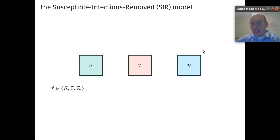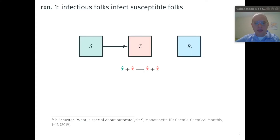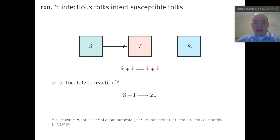There are two reactions that occur in this batch reactor. In the first reaction, an infectious individual comes into contact with a susceptible individual and infects them with a disease. That susceptible person then moves into the infectious category, assuming that there is zero delay between being infected and being infectious. This is analogous to an autocatalytic reaction where the reactant is the susceptible individual and the autocatalyst is the infectious individual.